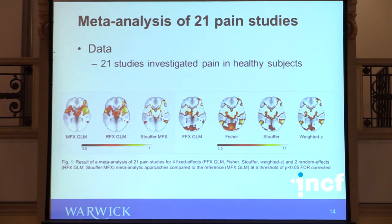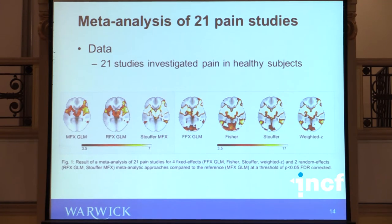We investigated 21 pain studies in healthy subjects and combined them in a one-sample test. On the left of this picture is the gold standard approach. Approaches on a grey background account for possible between-study heterogeneity, while those on a white background assume no between-study variance. Even qualitatively, you can see that approaches on the white background that ignore between-study variance tend to overestimate the statistics, leading to a higher rate of false positives.